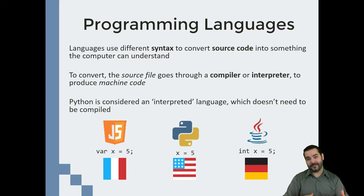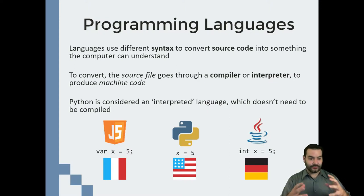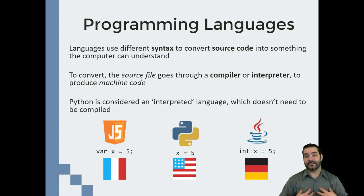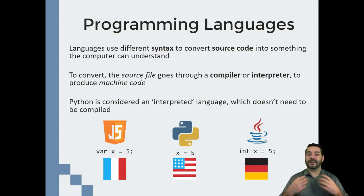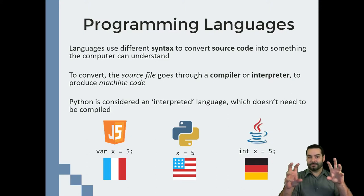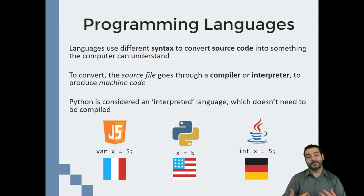What happens is I'm going to take these different syntactical terms and create something known as source code. That source code is going to be our program — it's something that we understand. The computer doesn't really understand it, and that's where things like interpreters and compilers come into play. They digest our English language written out in syntax and convert it into something the machine can understand.